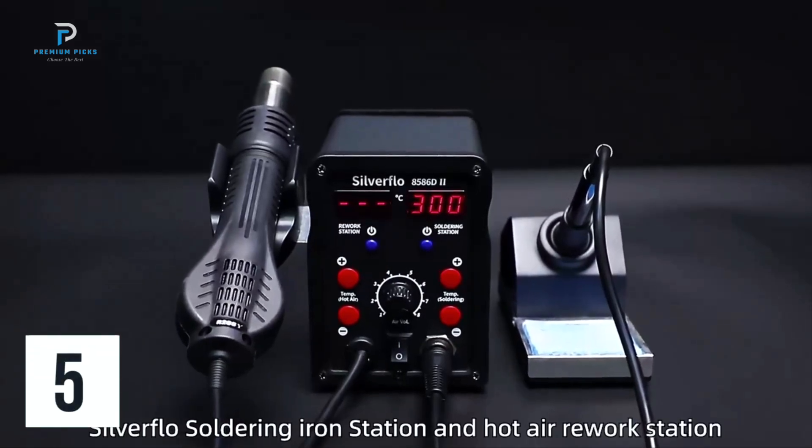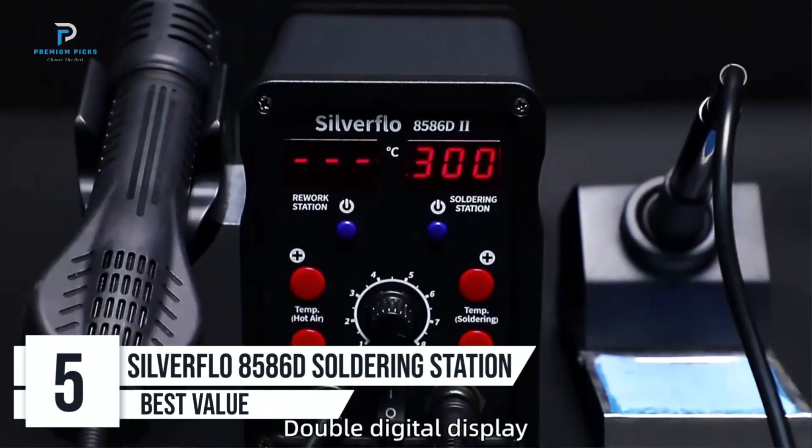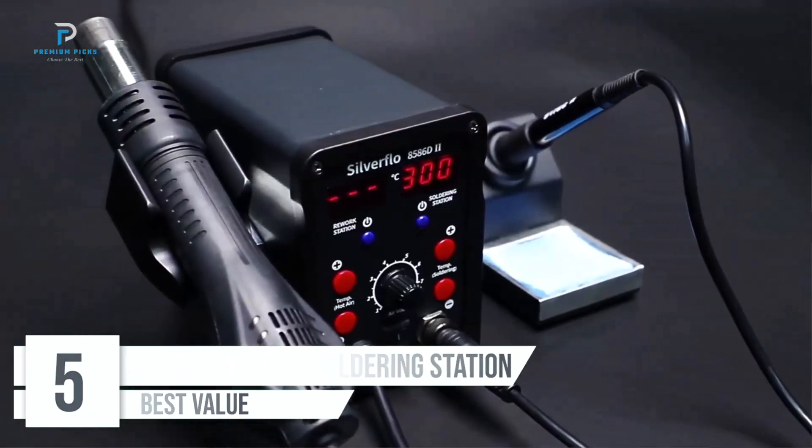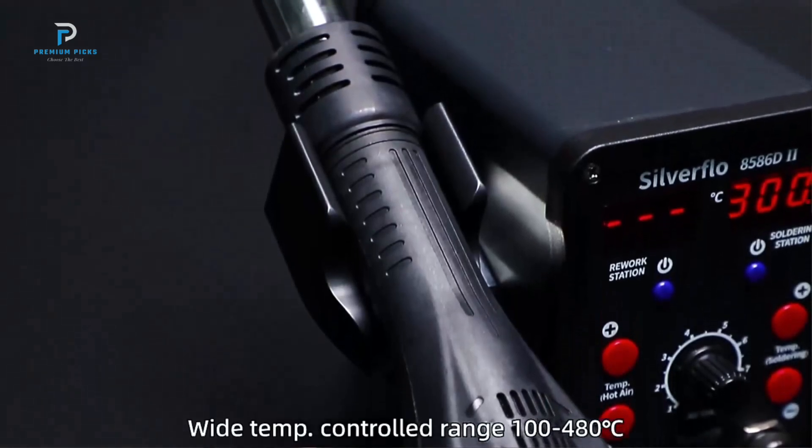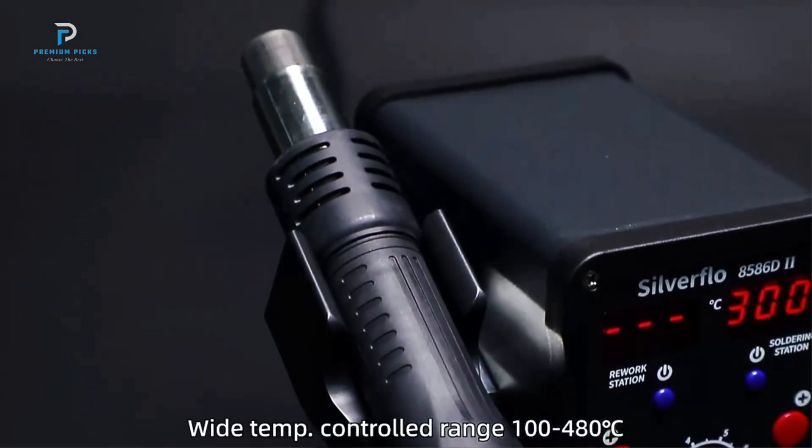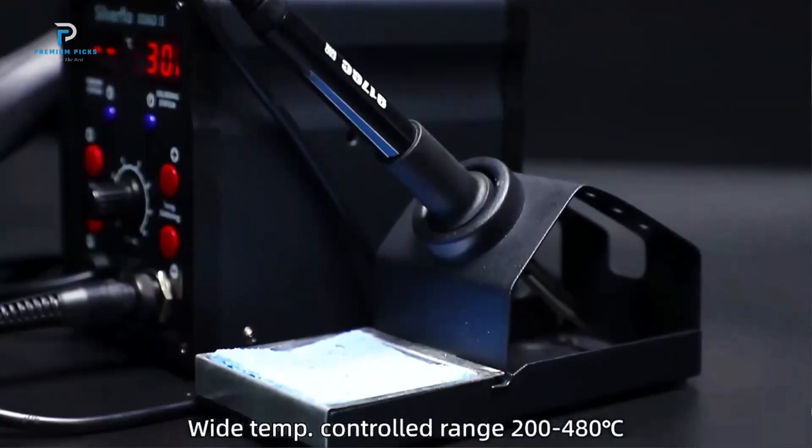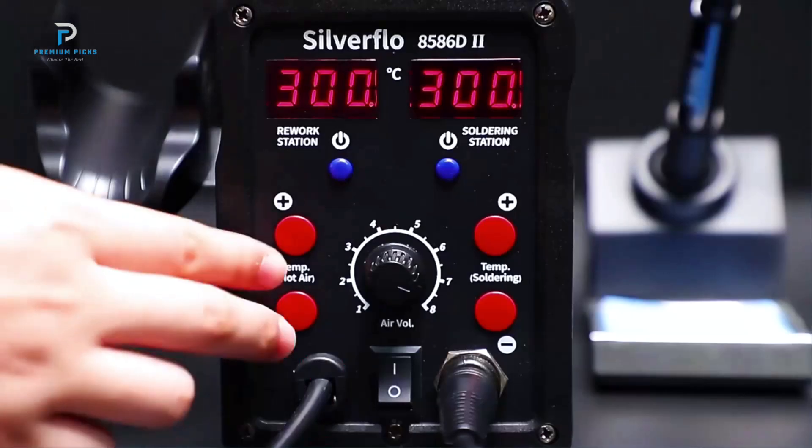Number 5, Silverflow 8586D Soldering Station. If you're serious about soldering and rework, the Silverflow 8586D soldering station is a game changer. This two-in-one station combines a soldering iron with a hot air gun, offering a seamless experience for SMD rework and precision tasks. With two digital displays and an impressive set of features, it caters to everyone from hobbyists to seasoned electronics professionals.